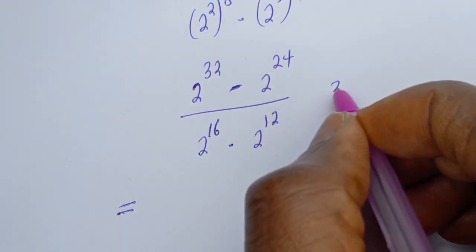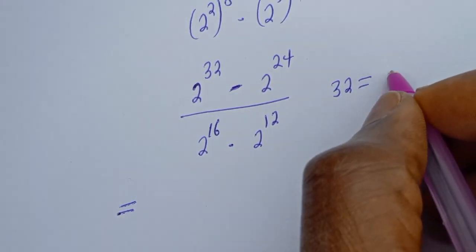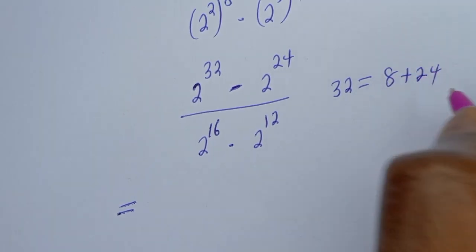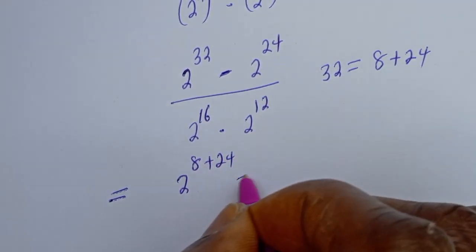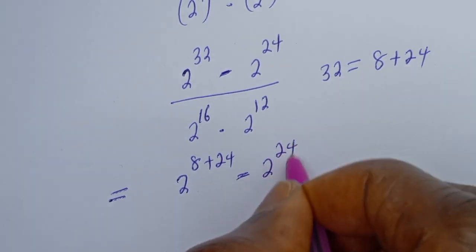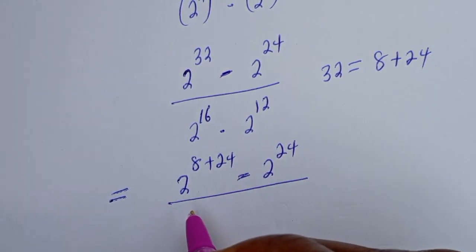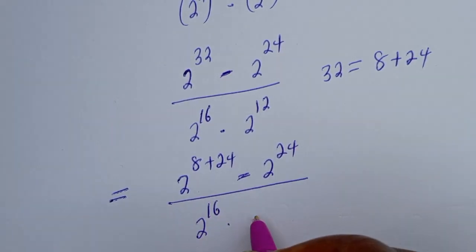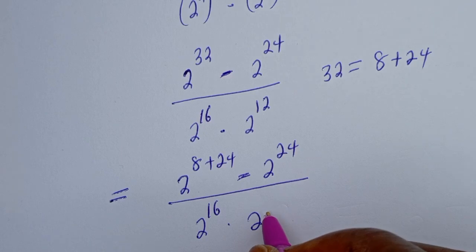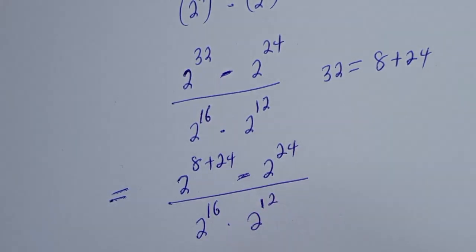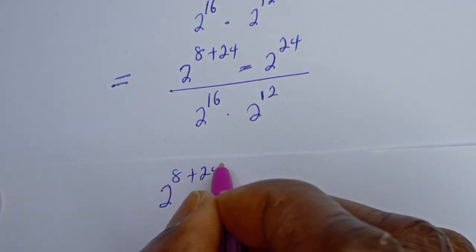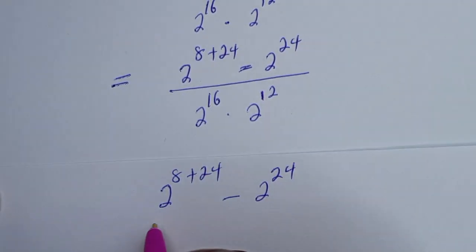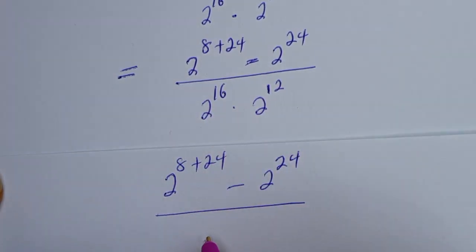Take note that 32 can be written as 8 plus 24. So the numerator becomes 2 to the power of 8 plus 24, minus 2 to the power of 24, all divided by 2 to the power of 16 plus 12.